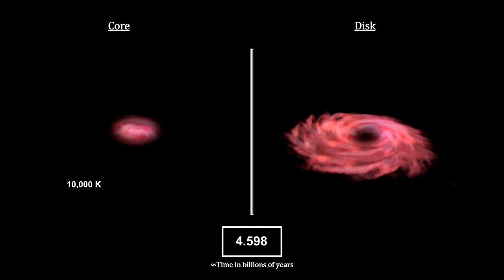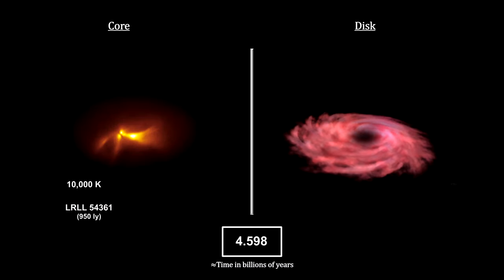At this temperature, it began to shine by normal, non-nuclear means. That made it a protostar. It may have looked like this one, just 950 light-years away.